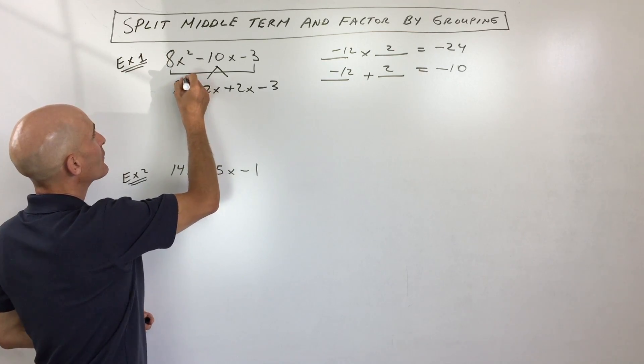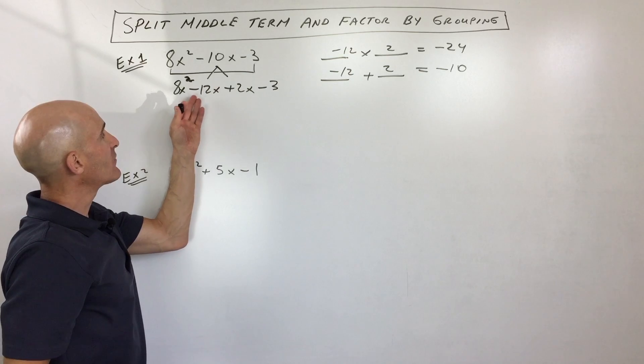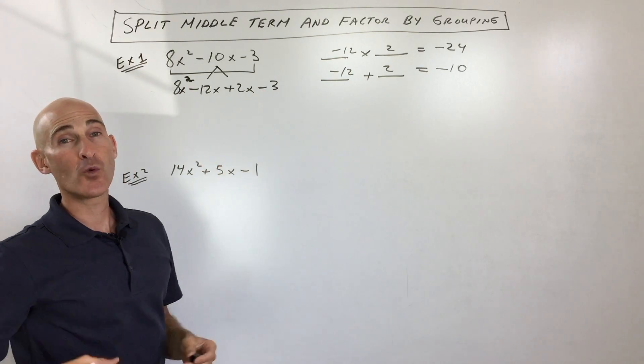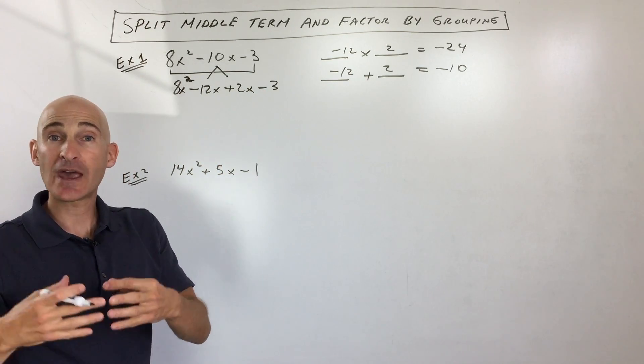Now what we do is bring down the first and last term like we just did here. And you can see you've got one, two, three, four terms. So when you have four terms, generally you look at factoring by grouping.